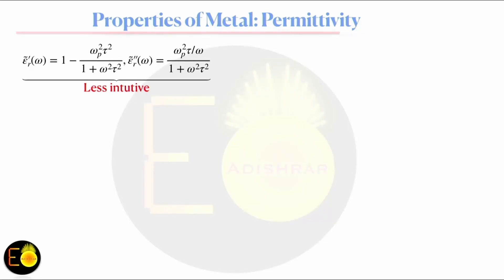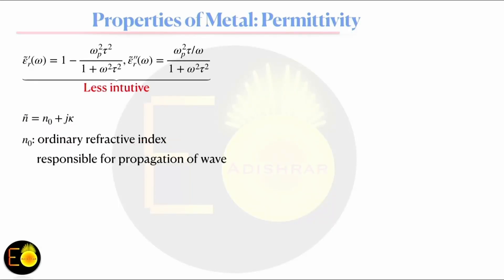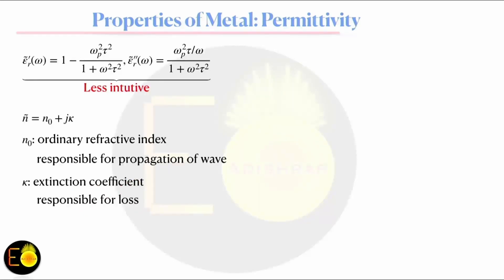Since Surface Plasmon Resonance is an optical phenomenon, we are interested in the optical properties of electromagnetic waves. The intuitive parameter for optical frequencies is the refractive index. In general, the refractive index is complex, with a real part and an imaginary part. The real part is the ordinary refractive index, responsible for propagation — the one learned at school level. The imaginary part is called the extinction coefficient, responsible for loss, i.e., extinction of the wave.